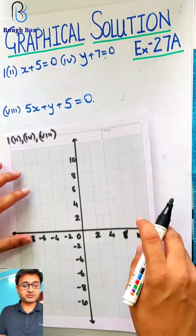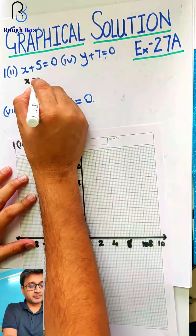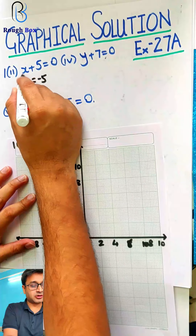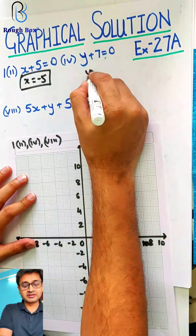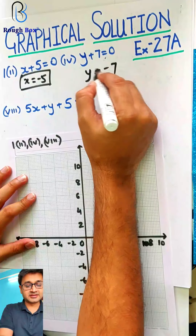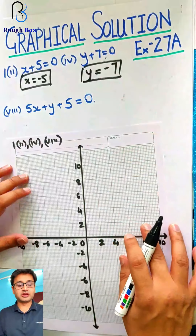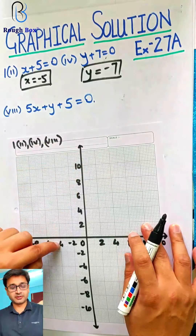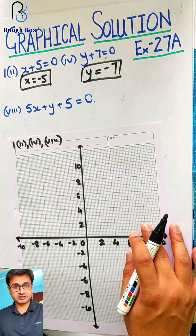First one: x plus 5 equals to 0, so that means x is equal to minus 5. And y is equal to minus 7. So at least these two we can draw straight away, and then we'll go with the next one.